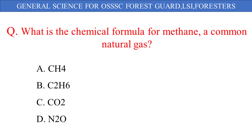What is the chemical formula for methane, a common natural gas? The given options are: A. CH4, B. C2H6, C. CO2, D. N2O. And the correct answer is option A: CH4.